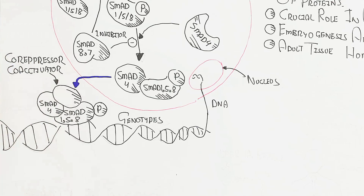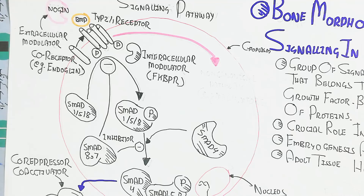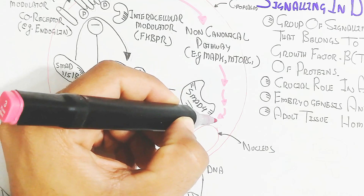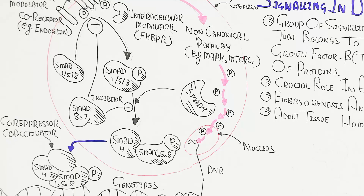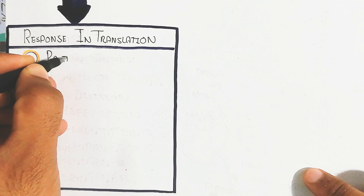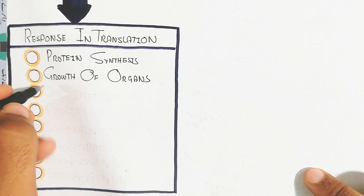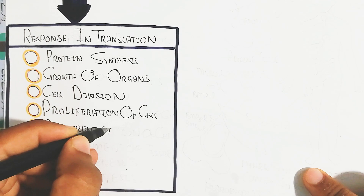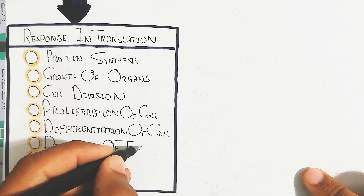Co-receptors and co-activators also bind with this complex. On the other hand, there is a non-canonical pathway — examples include MAP kinase and mTOR complex 1 — which leads to phosphorylation and gene activation driving morphogenesis, protein synthesis, cell growth, organ growth, cell division, cell proliferation, cell differentiation, tissue development, organogenesis, and embryogenesis. Bones also develop through the BMP pathway.